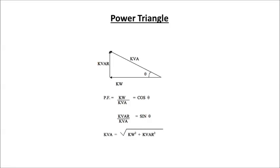KVA is the largest side as it is the hypotenuse of a right angle triangle. So in any case, you won't get kilowatts to be greater than KVA. You will always be dividing a value which is less than KVA. Kilowatts cannot exceed KVA. So you will never get cos theta greater than 1 — not even 1.0001 is possible.